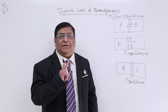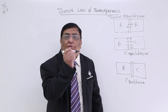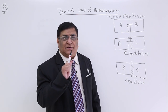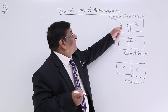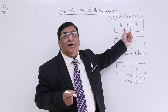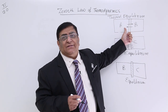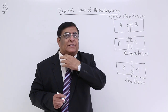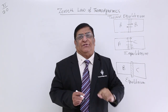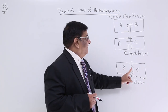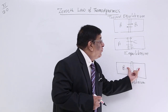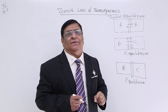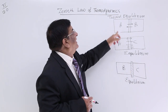Temperature is the physical quantity which decides the direction of flow of heat. Whether heat will flow this way or that way — to find out, you need to know the temperature. Temperature is the quantity that tells us the direction of heat flow. And when there is no flow of heat between two systems, what is equal in them — we call that temperature. This is how temperature is defined by the zeroth law.